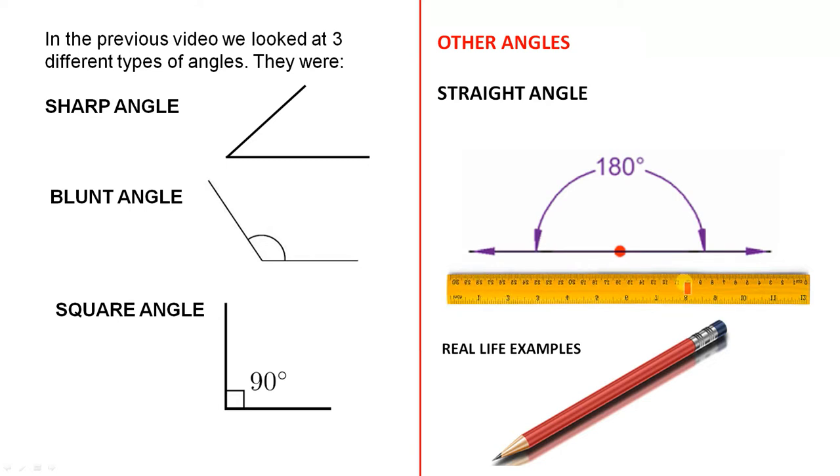Can you see this ruler? Just about every student and many people have rulers and that edge there is straight. So here is an example of a straight line or a straight angle because it's 180. Also the pencil, that's like a straight line. So there is a pretty good example of a straight angle.